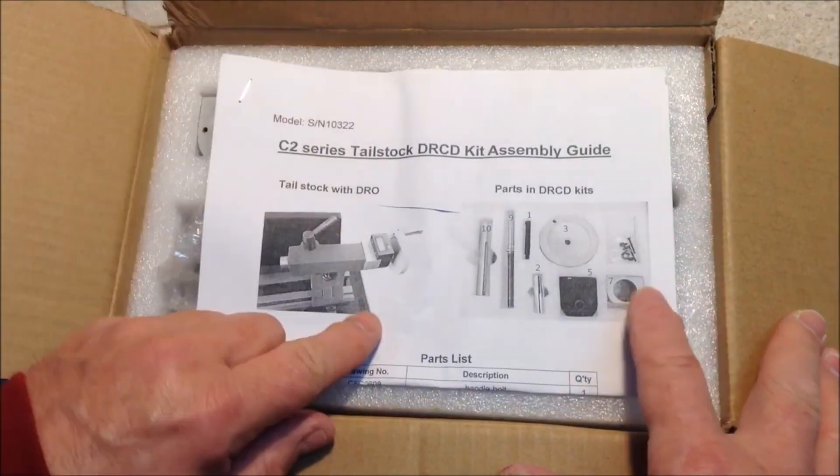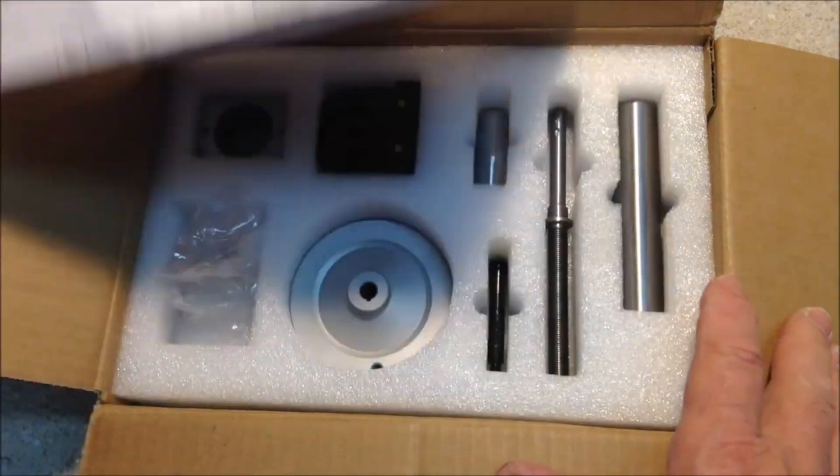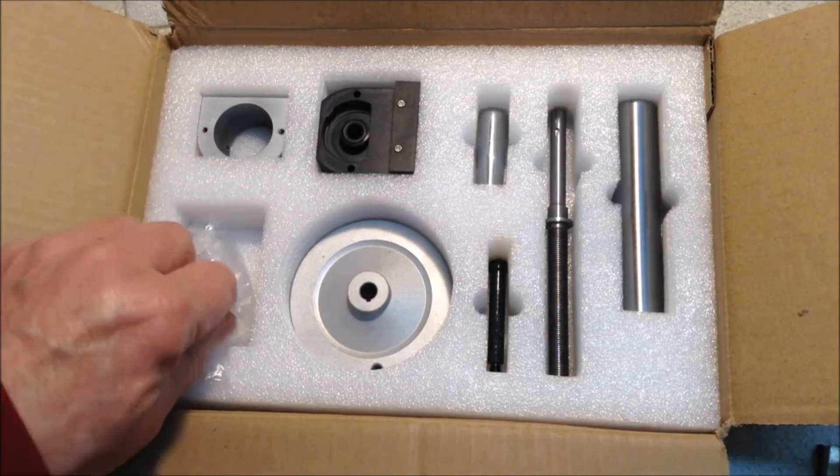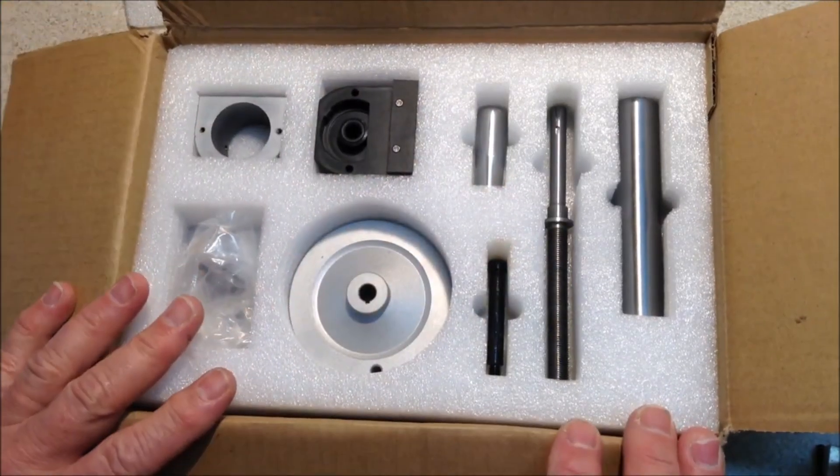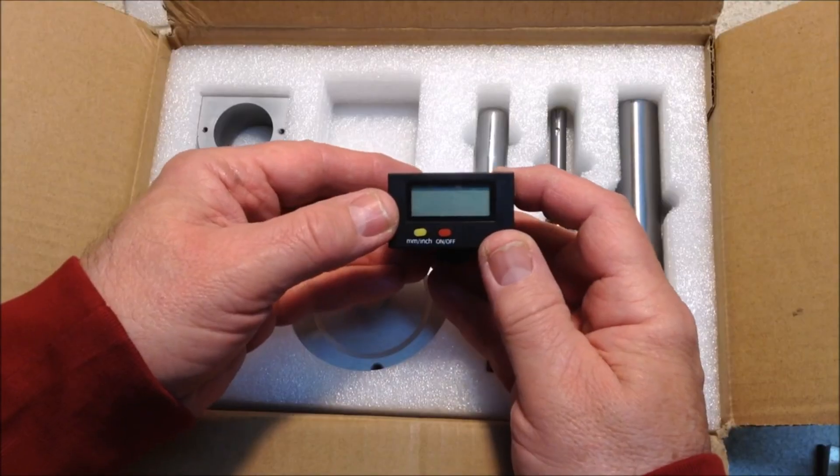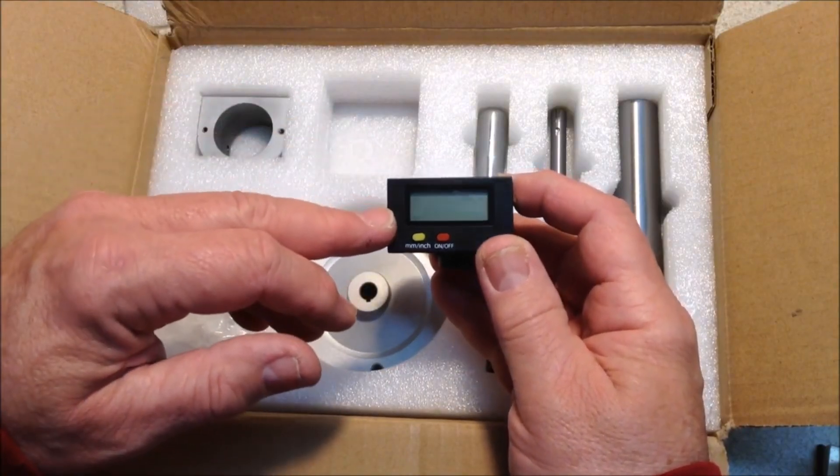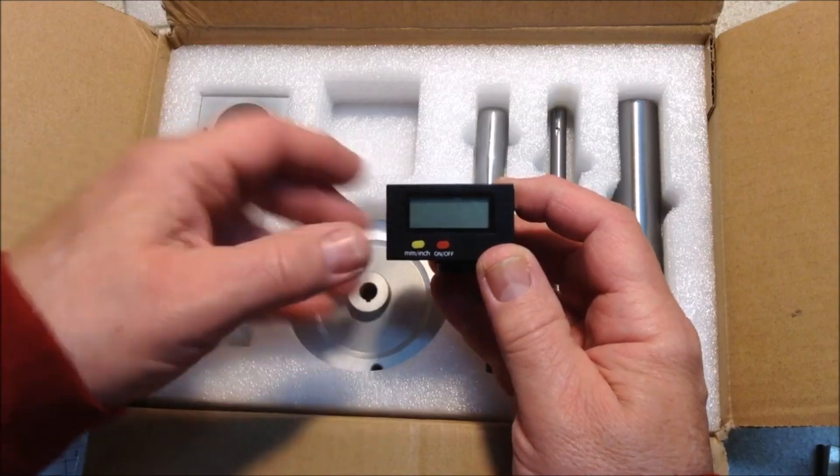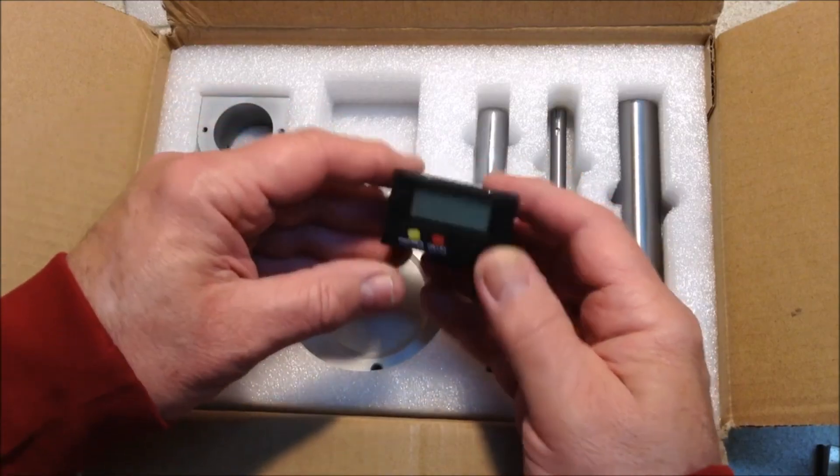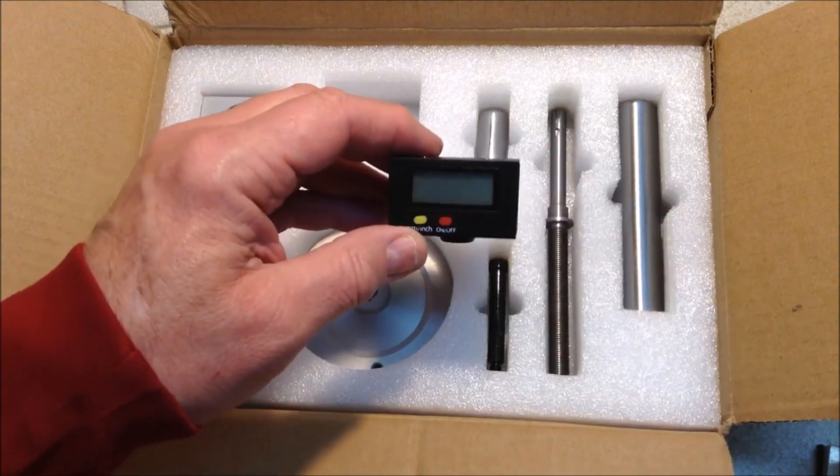This is a digital readout for the mini lathe tailstock. It's a kit of parts with screws and various other parts. This is the heart of the whole device, a digital readout that will show the tailstock ram depth in inches and millimeters, and you can reset it to zero at any point.